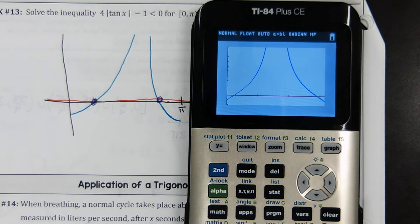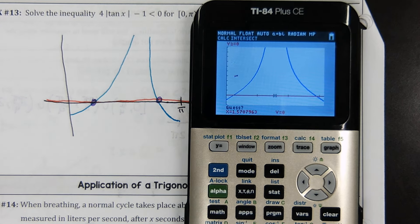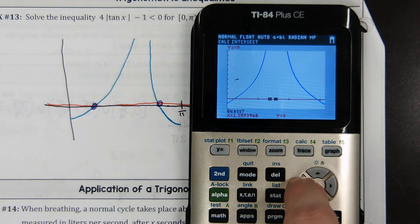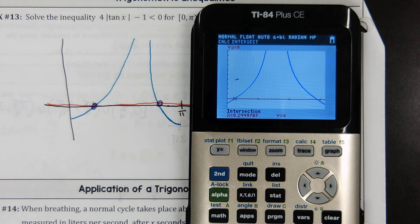Because the answer is going to be from 0 to there and from there to pi. Second trace intersect, which is command 5. Second trace 5. Yes. Yes. Enter, enter. Don't worry about that. It's just like an artifact. It happens sometimes. And then I'm just going to scroll over. And I hit enter. There it is. About 0.245.